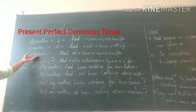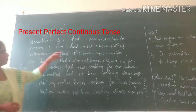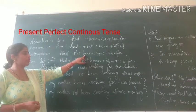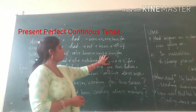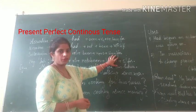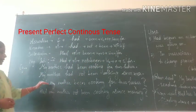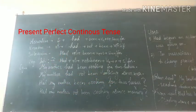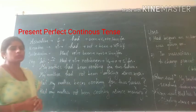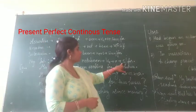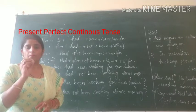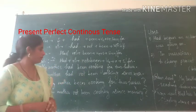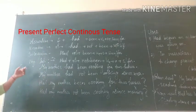To make an interrogative sentence, we place 'had' before the subject: Had + subject + been + present participle + object + since/for? For example: 'Had my mother been cooking for 2 hours?' Remember: 'since' is used to denote a point of time and 'for' is used to denote a period of time.